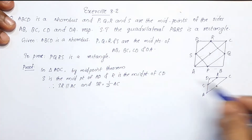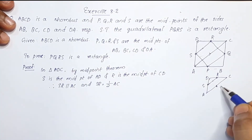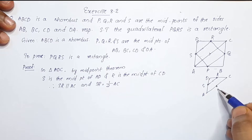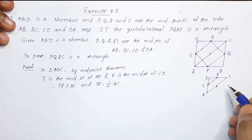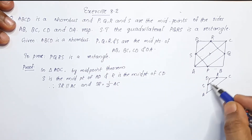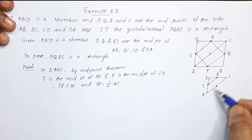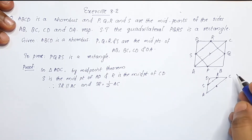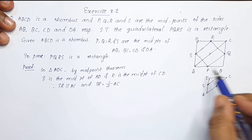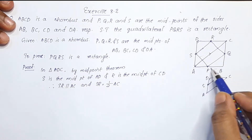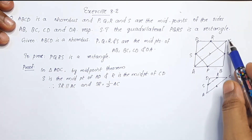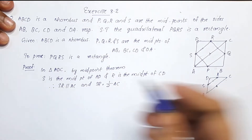So SR is equal to half AC, and SR is parallel to AC. Now consider triangle ABC.